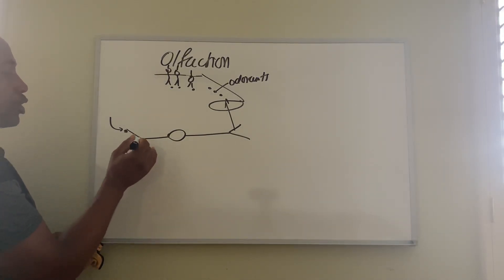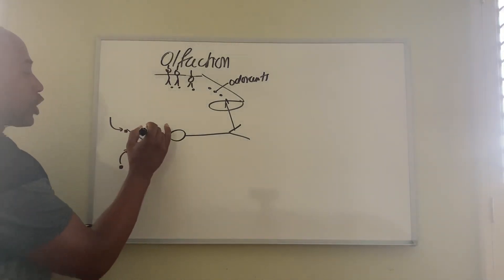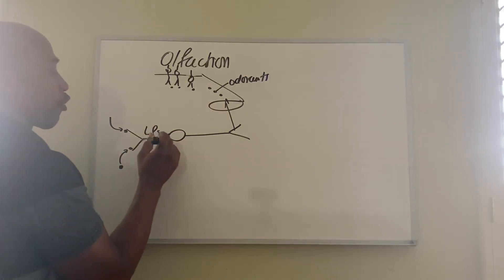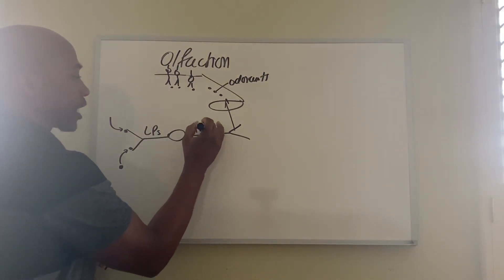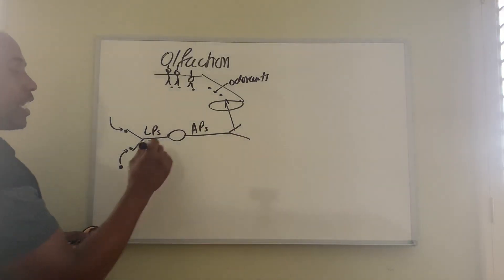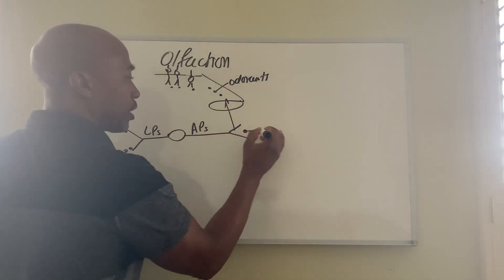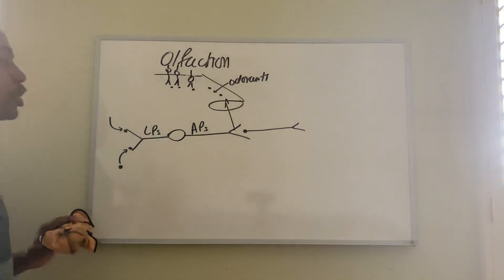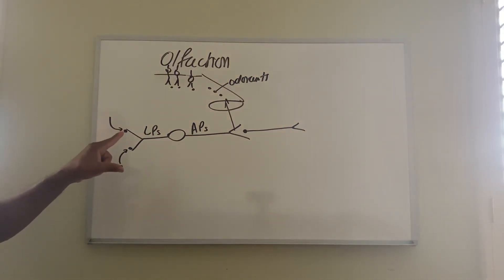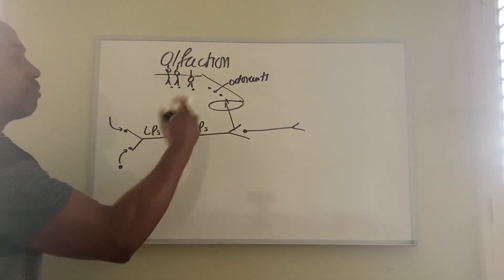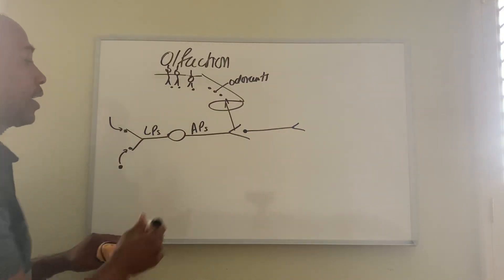They bind into these cells where they have receptors on them called olfactory receptors, and these odorants will trigger these receptors to generate local potentials here that would eventually create action potentials on the axon side that will then be relayed to the next neuron in the pathway. Let's deal with this part first: how odorants create local potentials in the neuron that eventually create action potentials.